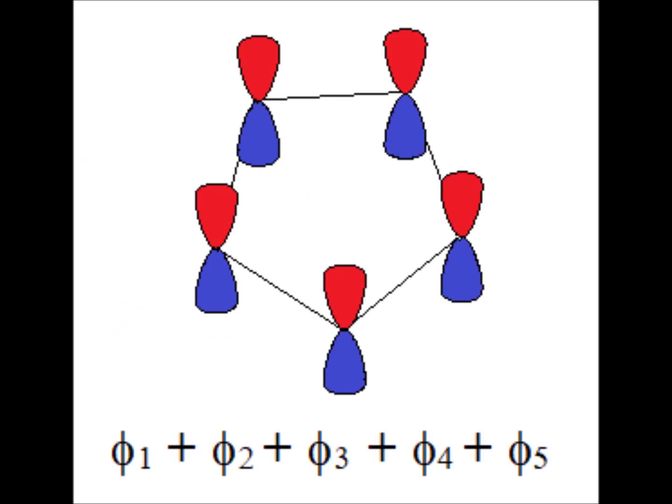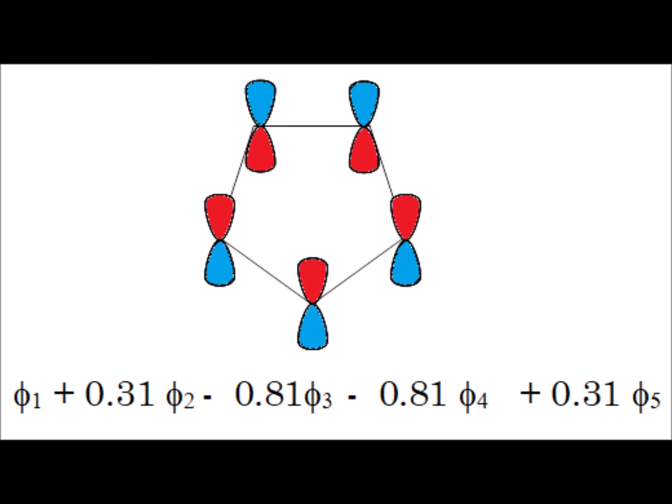For A2 double prime, all coefficients are positive and equal to one, so each p orbital makes an equal contribution and they are all in phase with each other — making it an overall bonding orbital with no nodes. For the E1 double prime orbital, we have varying-size coefficients, both positive and negative. The p orbitals with positive coefficients — phi1, phi2, and phi5 — share the same phase relationship, which is opposite to phi3 and phi4. A pictorial representation of these phase relationships is shown in the figure.